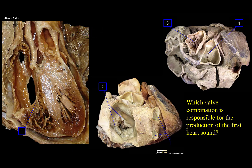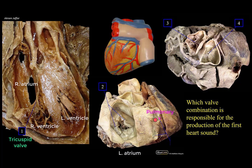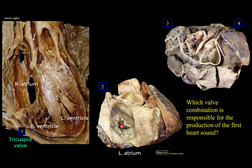Which valve combination is responsible for the production of the first heart sound? First we have to identify the valves. The picture on the left is a longitudinal section showing the right atrium, right ventricle, and left ventricle with the thickest wall. Structure 1 represents a cusp of the tricuspid valve, located at the right atrioventricular orifice — also called the right atrioventricular valve. The center picture shows a posterior view of the heart occupied mainly by the left atrium with pulmonary veins opening into it. The posterior wall of the left atrium is opened to reveal the mitral valve, or left atrioventricular or bicuspid valve, leading into the left ventricle.